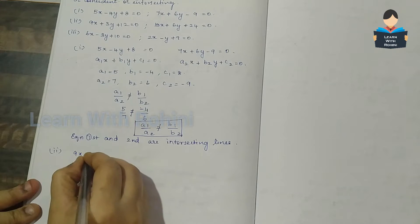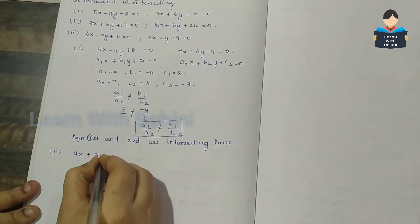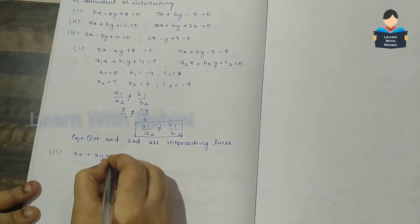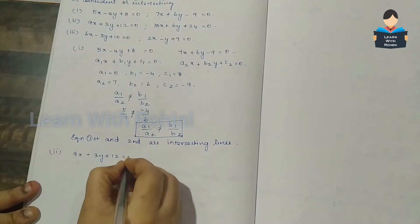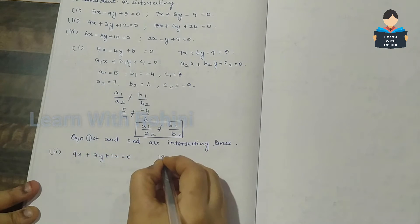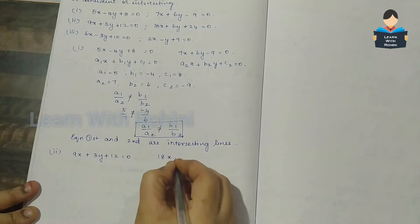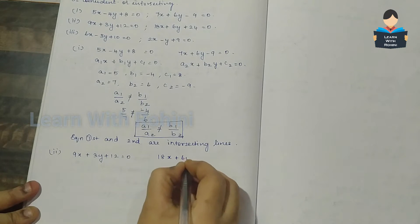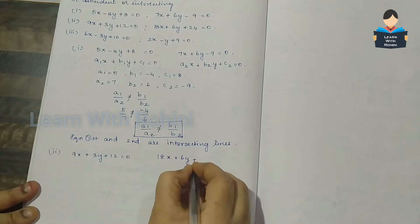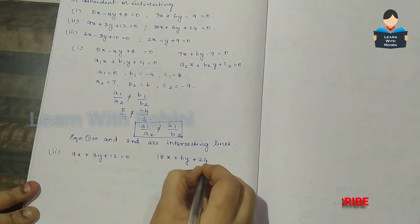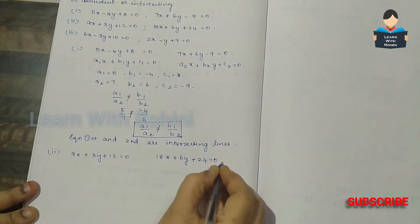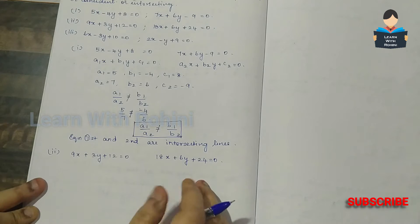Second subdivision: the equations are 9x plus 3y plus 12 equal to 0, and 18x plus 6y plus 24 equal to 0.